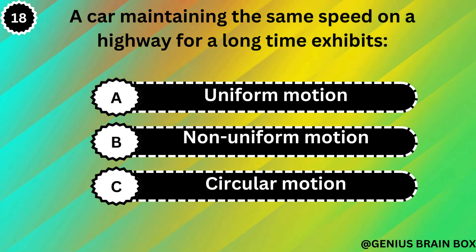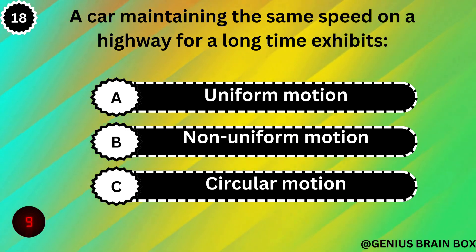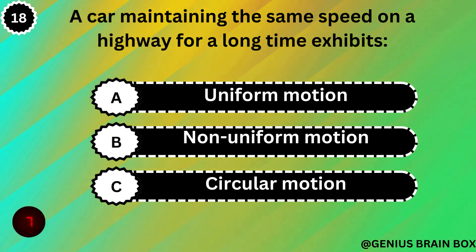A car maintaining the same speed on a highway for a long time exhibits: uniform motion, non-uniform motion, or circular motion.